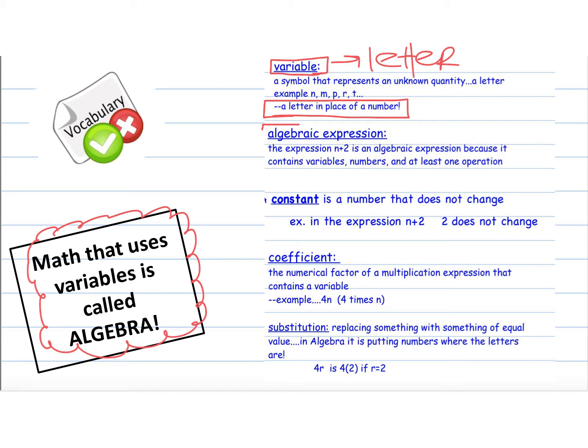An algebraic expression is an expression that contains variables, numbers, and at least one operation. If you remember our last video, we talked about numerical expressions that contained just numbers and operations. So a numerical expression would be 3 plus 2. An algebraic expression would be 3x plus 2. So it has a number, a variable, and at least one operation.